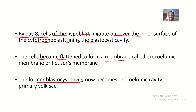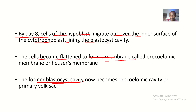Cells from the hypoblast migrate to the inner side and become flattened to form the exocoelomic membrane, or the Heuser's membrane. Where they migrate to was formerly the blastocyst cavity. Because they have migrated to this place, they push the blastocyst cavity away, and this becomes the exocoelomic cavity, or the primary yolk sac.